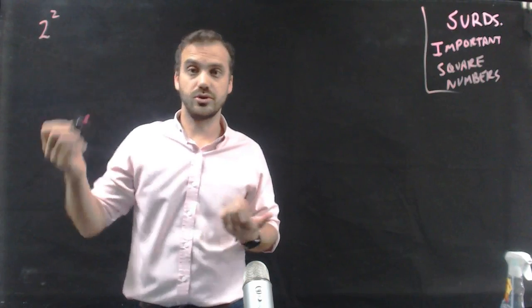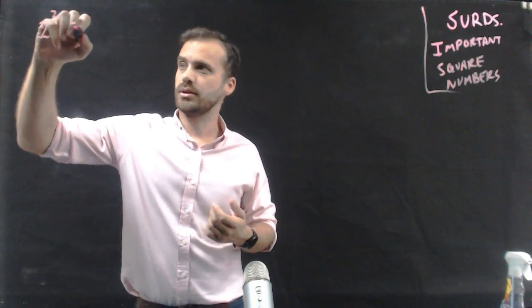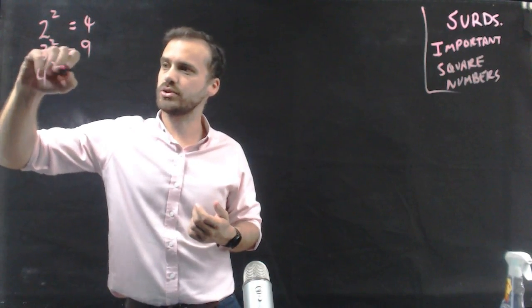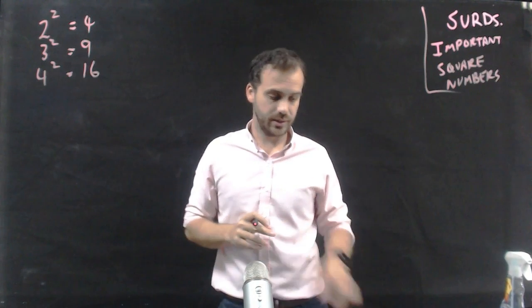So 2 squared, that's 2 times 2, is 4. 3 squared is 9, 4 squared is 16, and I can go on like this.